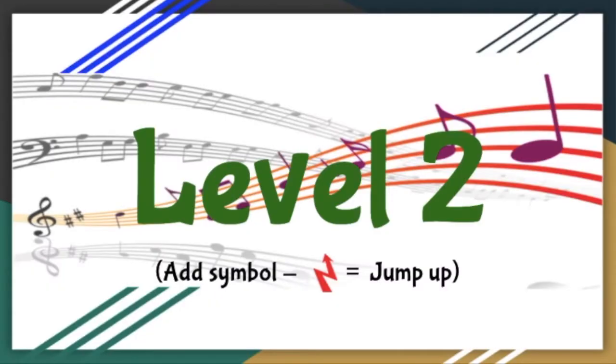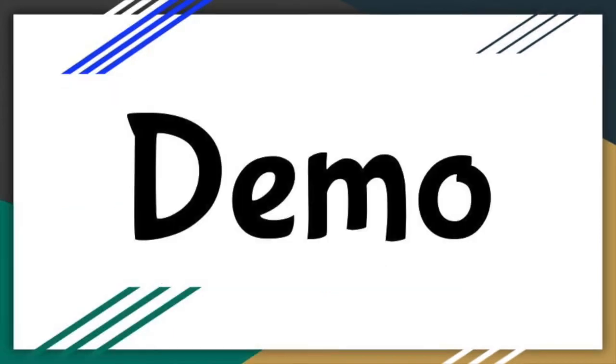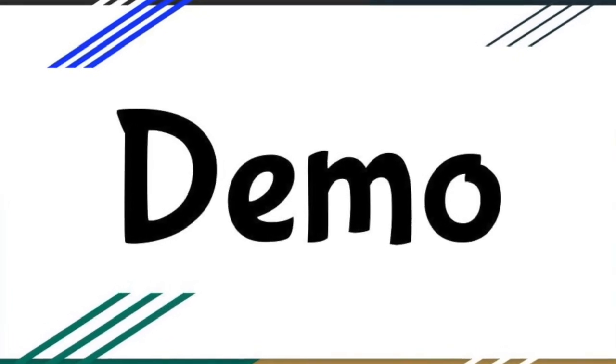Okay, on to level two where the music changes and we add a symbol. In this case, a jump symbol. First, let's look at a demonstration for level two.